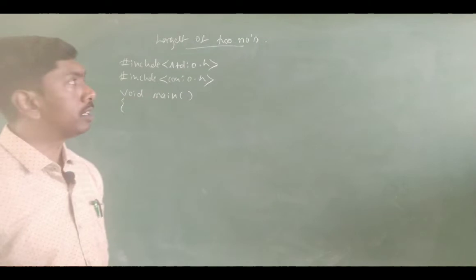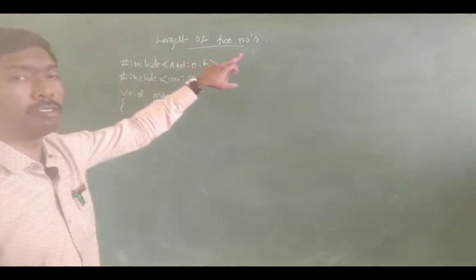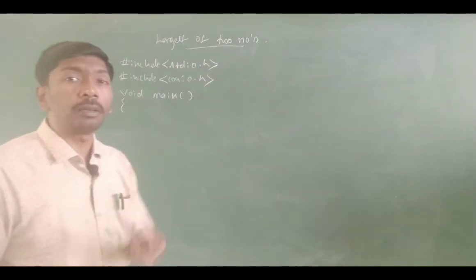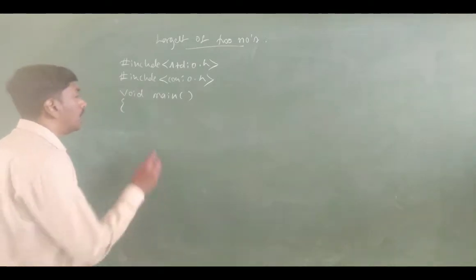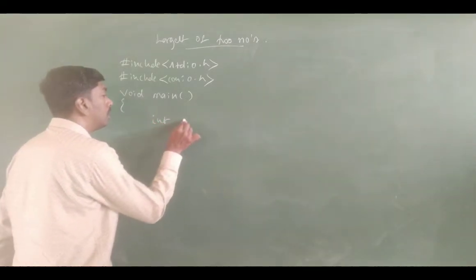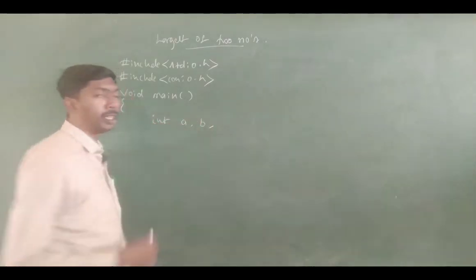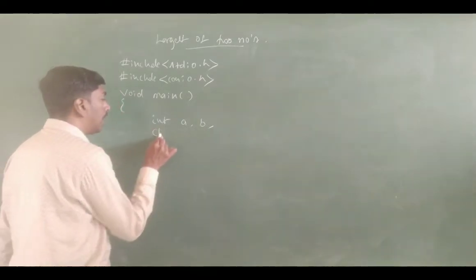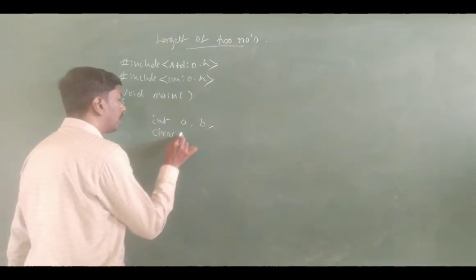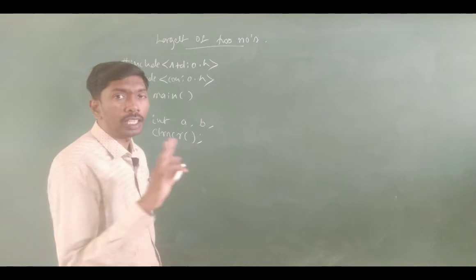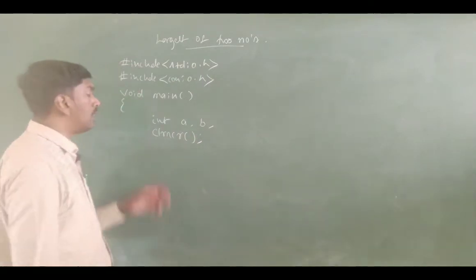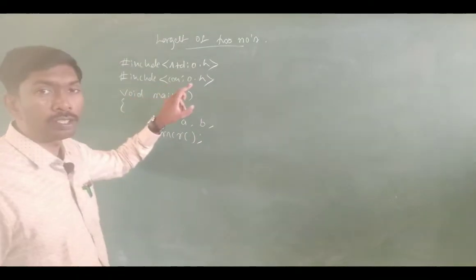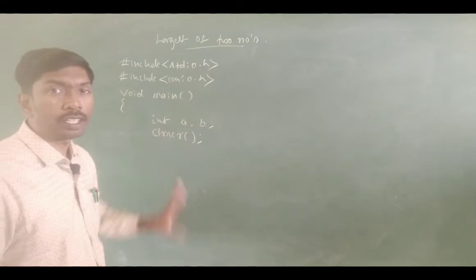This is the largest of two numbers program. We have integer variables A and B. Next, clrscr — clear screen. We can use clrscr; that clear screen function is under conio.h, but we need the header file. We include stdio.h and conio.h.